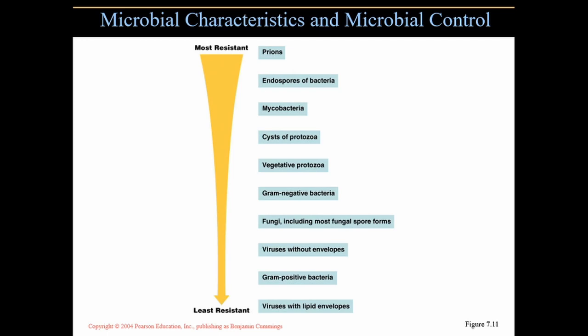Going down the resistance chart, after endospores, we reach the least resistant: viruses with lipid envelopes. They're the least resistant because of that lipid envelope. Viruses without an envelope are actually more resistant than viruses with an envelope — even though you might think the extra layer provides protection. The lipid envelope is simple and lipids are easy to break down with disinfectants, making these viruses very susceptible. Without the lipid envelope, the virus is done. Viruses without envelopes are more resistant because they have a capsid — a protein coat that is more difficult to break down than lipids.